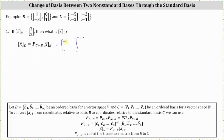The first column of the C matrix is [-5, -2] and the second column is [-2, -1]. We need to find the inverse of this matrix, then multiply by the matrix formed using the basis vectors from set B, whose first column is [1, -3] and second column is [0, 1]. Then we multiply by the coordinates of vector X relative to basis B. The inverse of the first 2×2 matrix has already been computed: the first row is [-1, 2] and the second row is [2, -5].